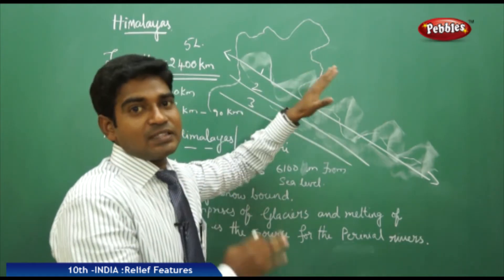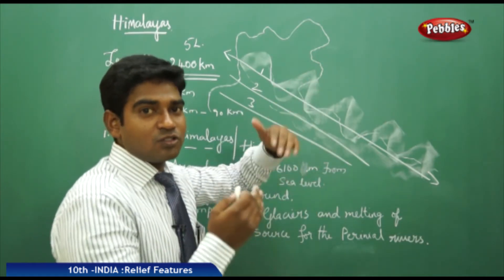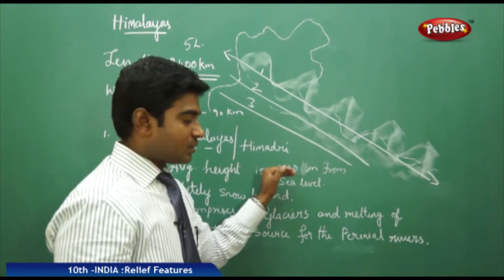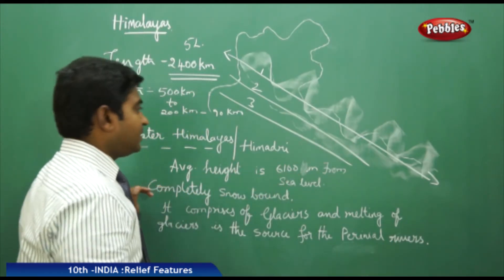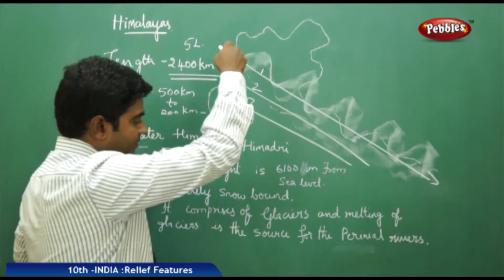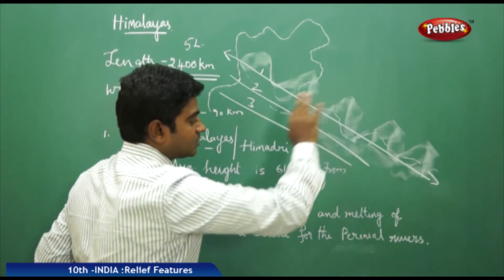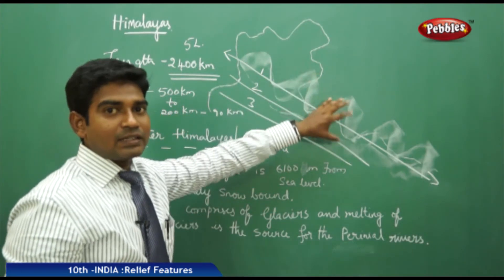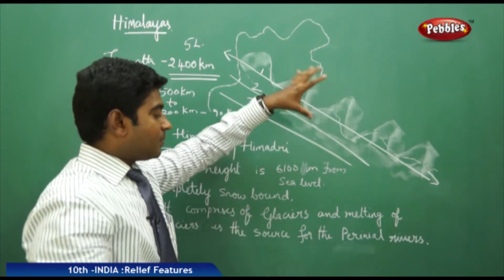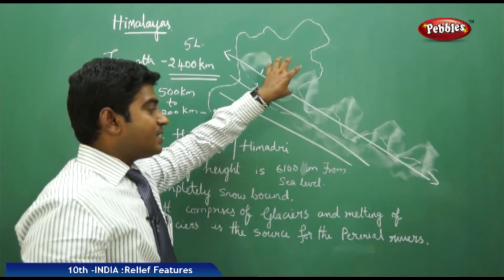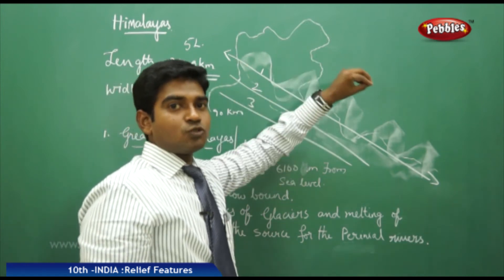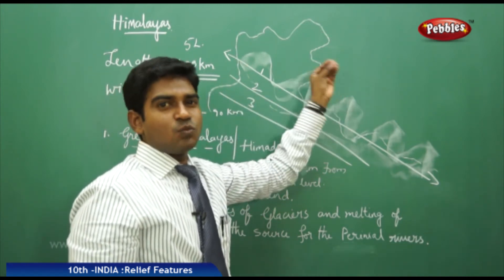All the highest peaks in the world, like Mount Everest and K2, fall within this range. This is a completely snow-bounded region, comprised of glaciers. These glaciers melt, tilt, and move, and when they melt, they become the sources of the perennial rivers — rivers with continuous flow.